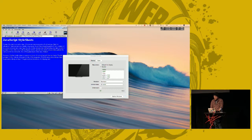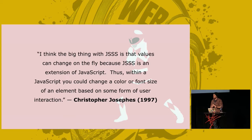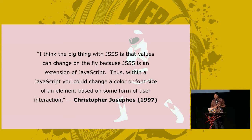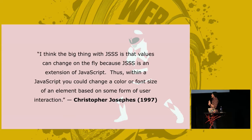There was a lot of excitement around this idea of being able to programmatically adjust styles. A big thing with JSSS is that a value can change on the fly, because JSSS is an extension of JavaScript. Within JavaScript, you could change the color, font size, or element styling based on user input. You could imagine a form where if everything is invalid, you change how those styles are expressed. You couldn't do a lot of stuff because even in Netscape 4.8 the methods to adjust the DOM weren't there yet — so a lot of the potential wasn't fully met.